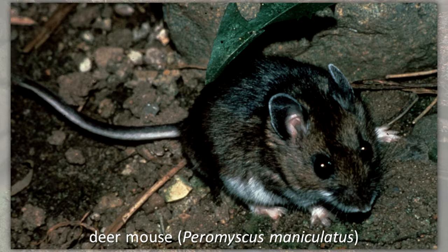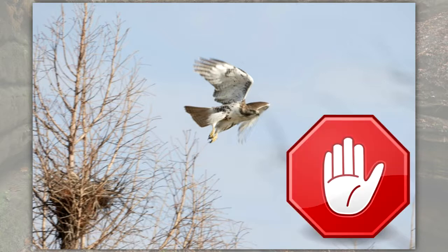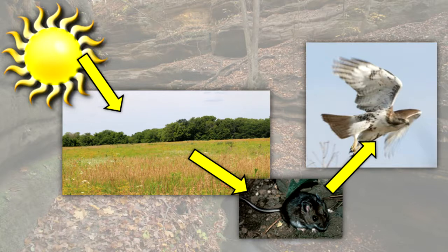A deer mouse may eat the seeds of some of these plants. A red-tailed hawk may see the deer mouse, capture it, and eat it. This food chain ends here. It relates the transfer of energy from the sun through the chain to the apex predator.